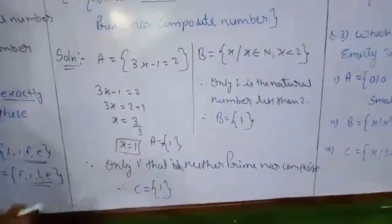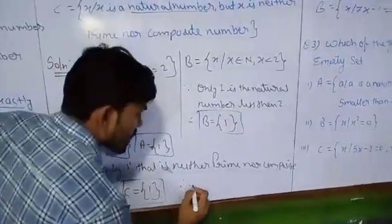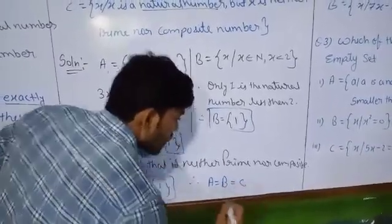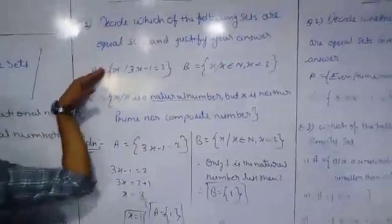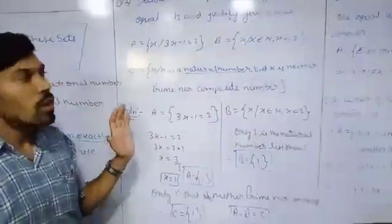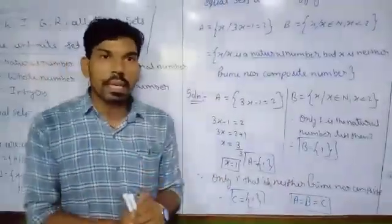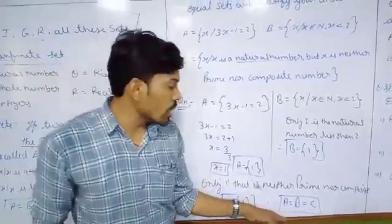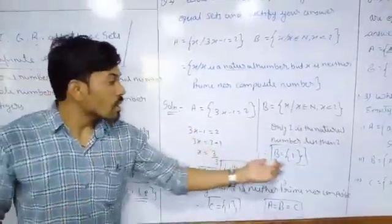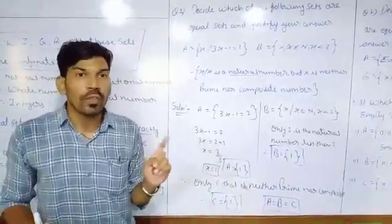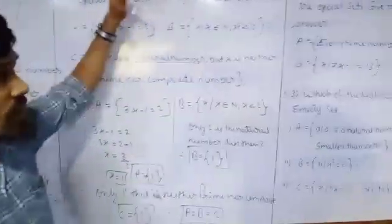In all three sets we got the answer 1: set A equals {1}, set B equals {1}, set C equals {1}. Therefore we can say set A is equal to set B is equal to set C — all three sets are equal. If the question is asked, we solve each set, then check whether we are getting the same elements. If we get the same elements these are equal sets. Remember: we check the actual elements, not just the number of elements.